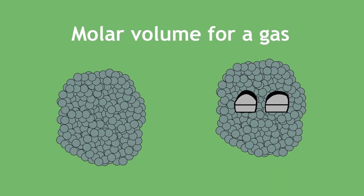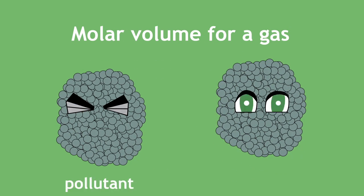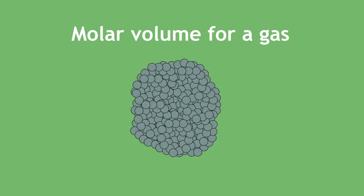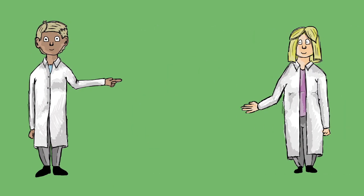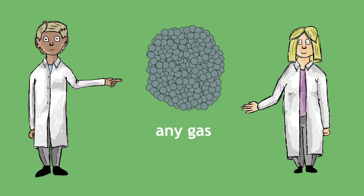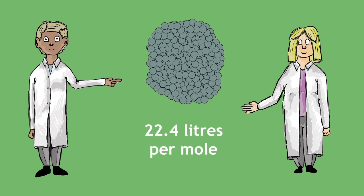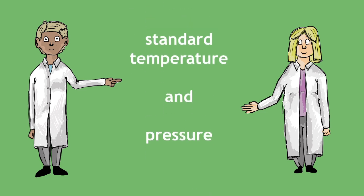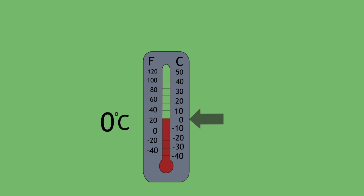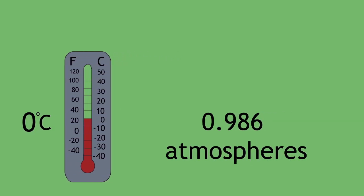Fortunately, the molar volume for a gas — whether that gas is a pollutant or not — is always the same. Scientists have found that one mole of any gas occupies approximately 22.4 litres per mole under standard temperature and pressure, which is 0 degrees centigrade and 0.986 atmospheres respectively.